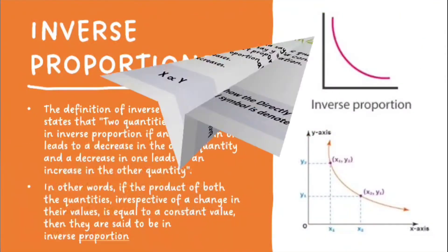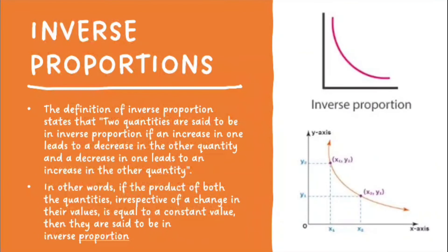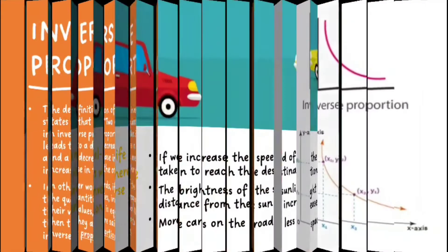The definition of Inverse Proportion states that two quantities are said to be in inverse proportion if an increase in one leads to a decrease in the other quantity, and a decrease in one leads to an increase in the other quantity. In other words, if the product of both the quantities — irrespective of a change in their value — is equal to a constant value, then they are said to be in inverse proportion.